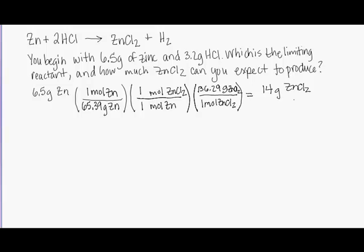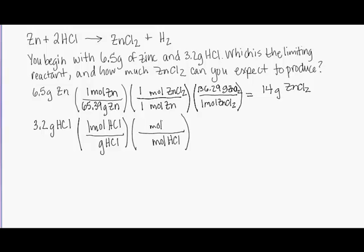So now we know that from 6.5 grams of zinc, we can get 14 grams of zinc chloride when we don't have to account for how much hydrochloric acid is available. Now we'll do the same calculation, but we'll do it for the hydrochloric acid. We'll follow the same pattern in our conversions, going from grams of HCl to moles of HCl, and then using our balanced equation to find our molar ratio to take us from moles of HCl to moles of zinc chloride.